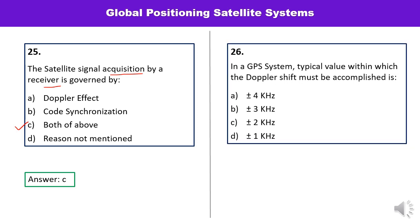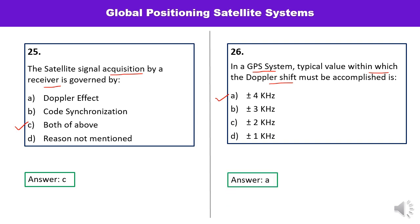Question number twenty-six: In a GPS system, the typical value within which the Doppler shift must be accomplished — plus or minus 4 kHz, plus or minus 3 kHz, plus or minus 2 kHz, or plus or minus 1 kHz? The Doppler shift must be accomplished within plus or minus 4 kHz, so A is the correct answer.